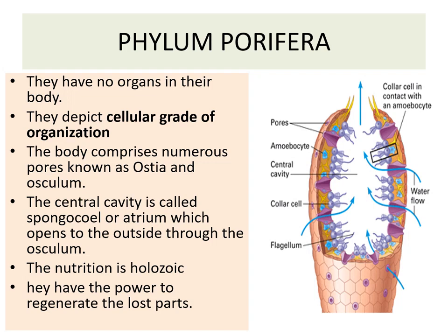The body comprises a large number of pores called ostia for taking in water, and one single hole known as osculum for throwing out water. The central cavity is called the spongocoel or atrium, which opens to the outside by the osculum.